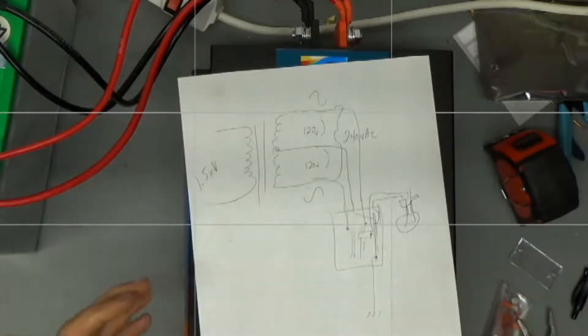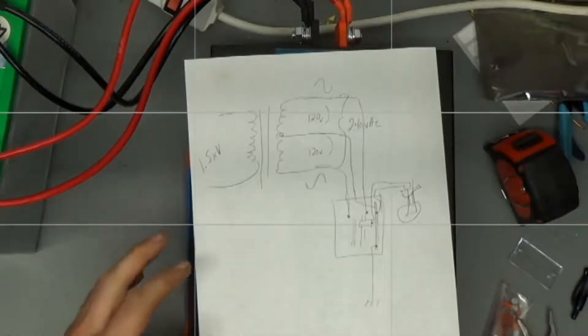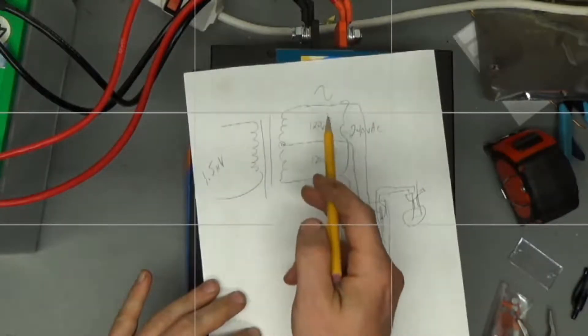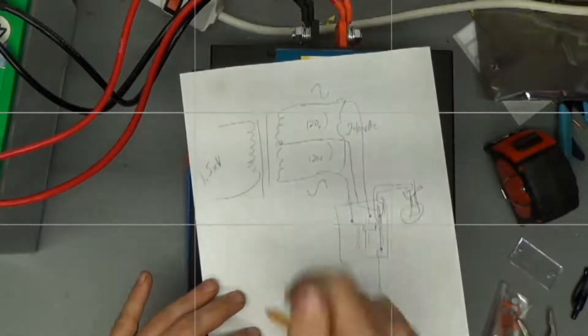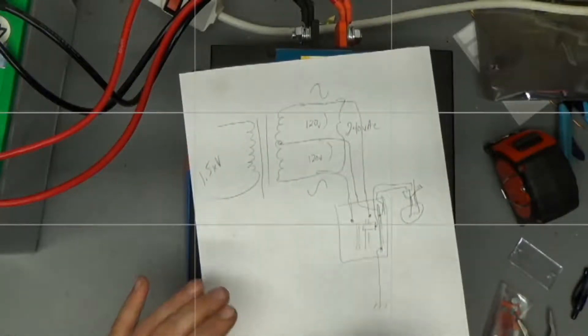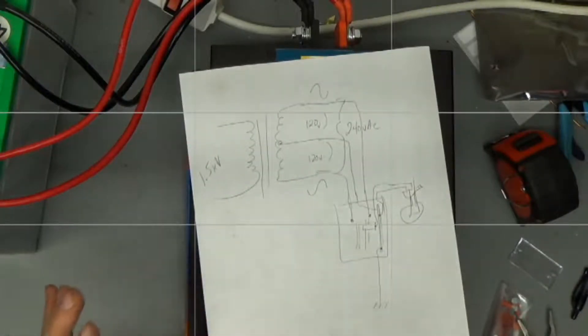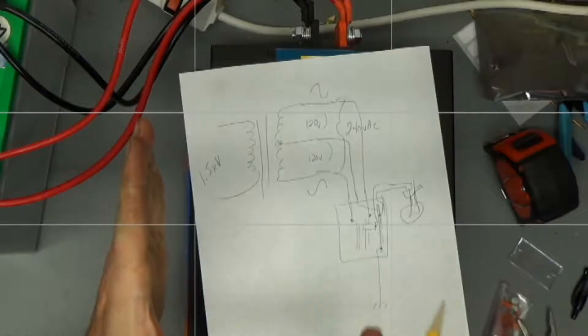My supposition is that in these cheap inverters, they're driving each side of the output 180 degrees out of phase so that they can use components that are only rated to 60 volts to save money instead of driving one side all the way to 120 volts and holding the other side at neutral where it's supposed to be.